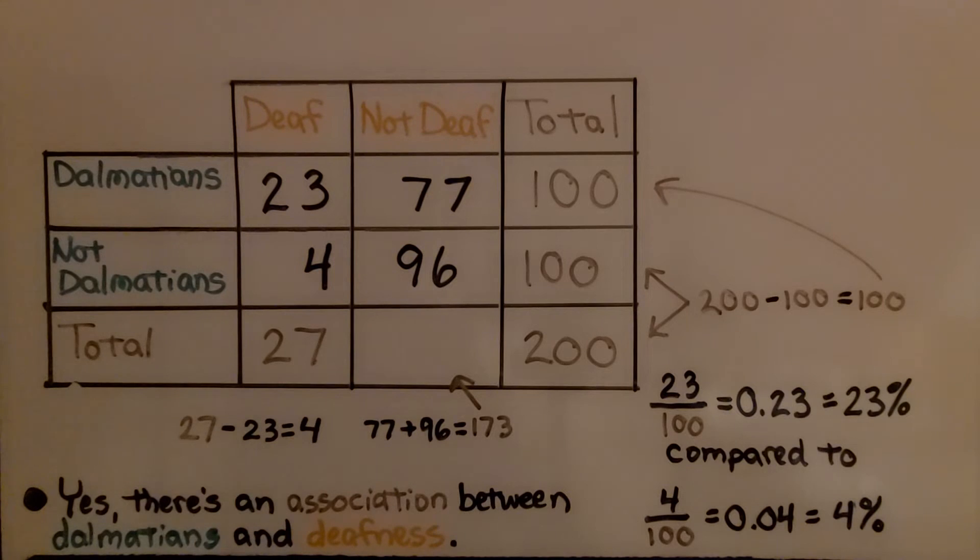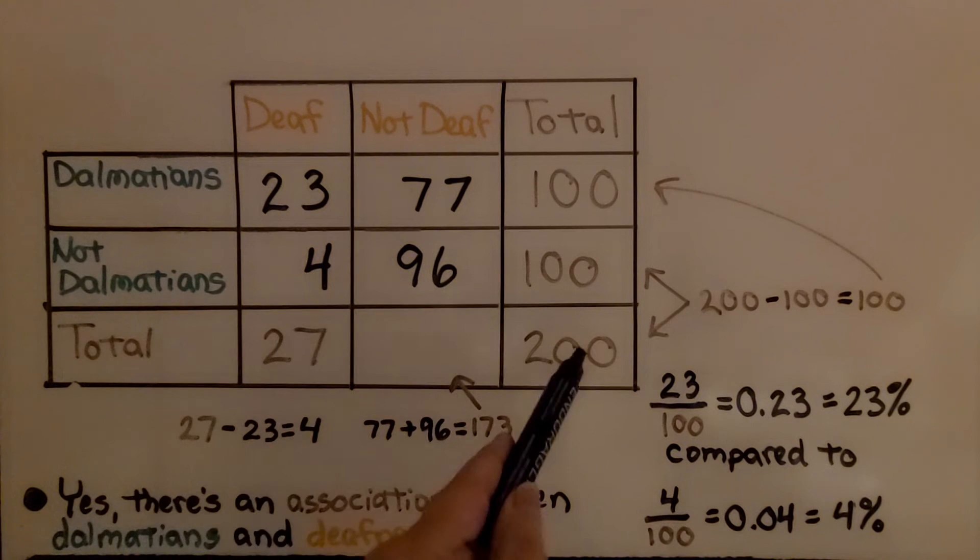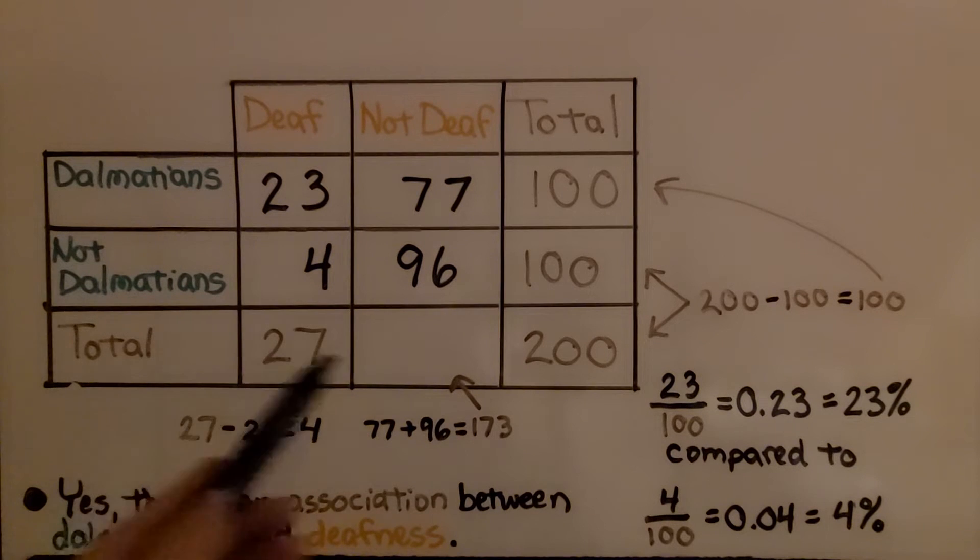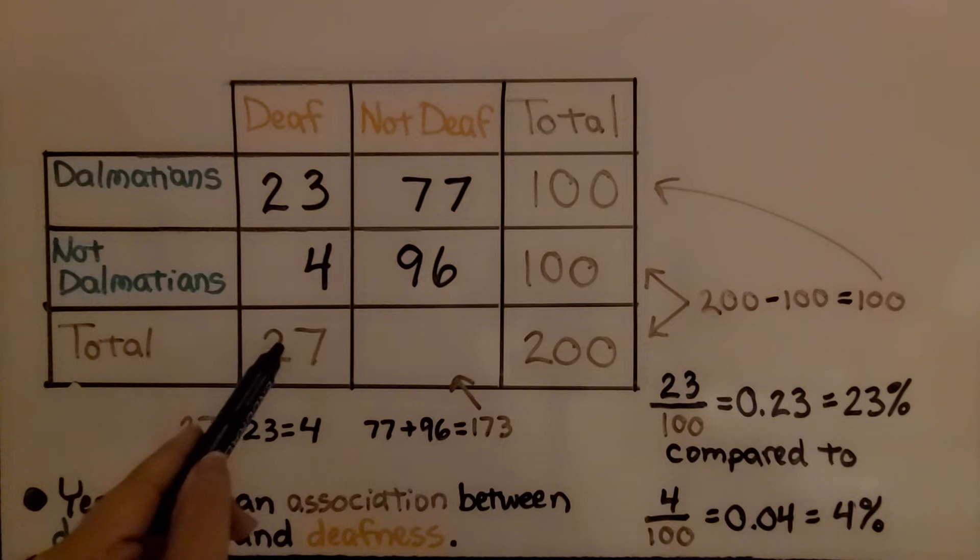Now we need to fill in this cell, we have a total of 27 deaf dogs out of 200, we can either subtract 200 minus 27,